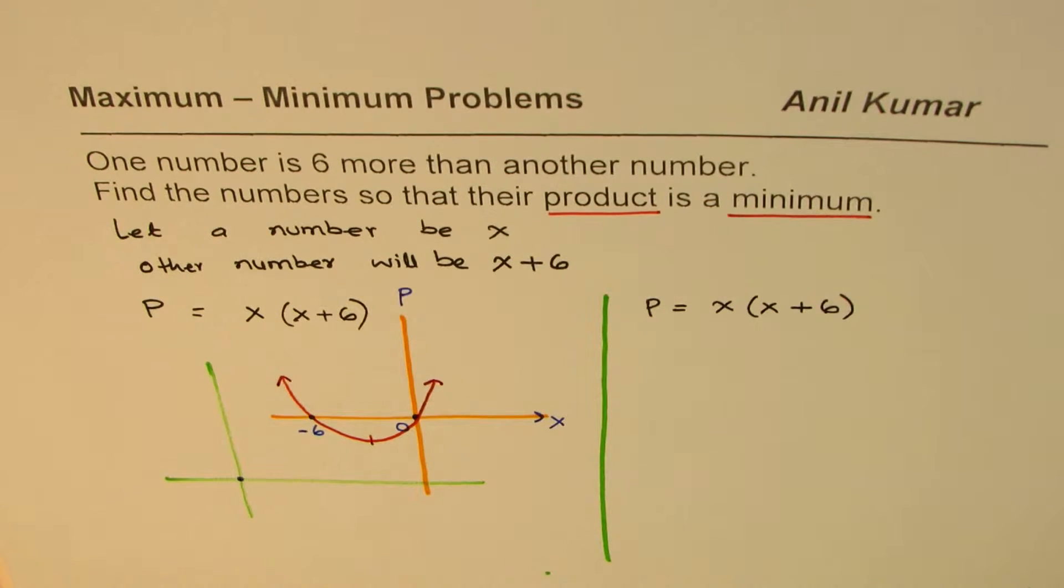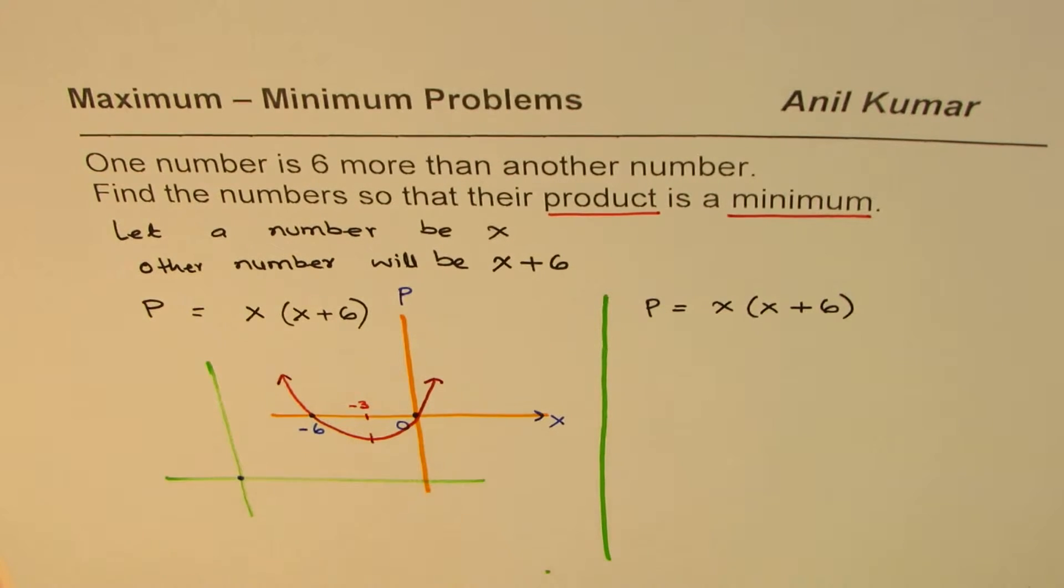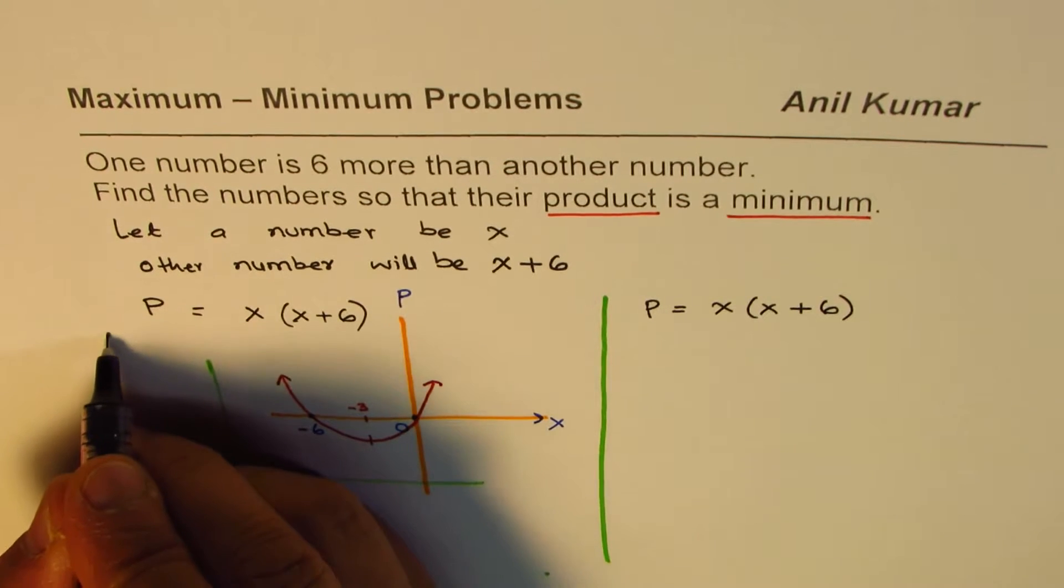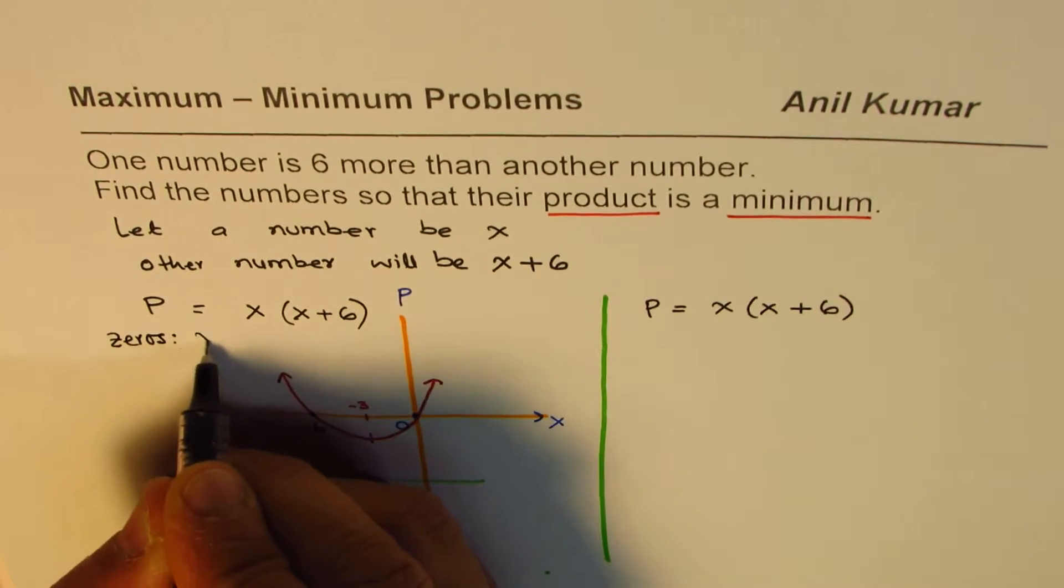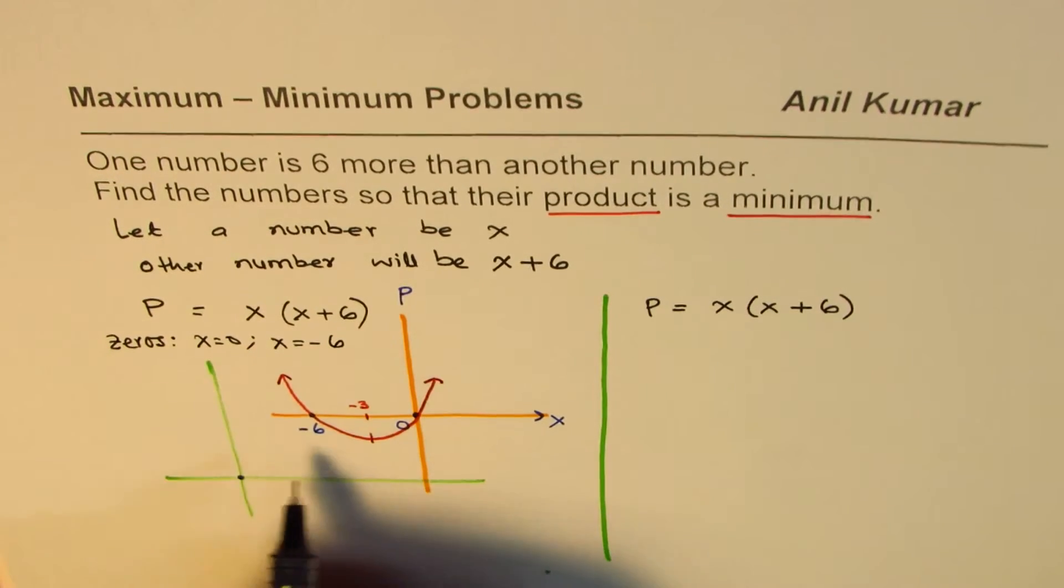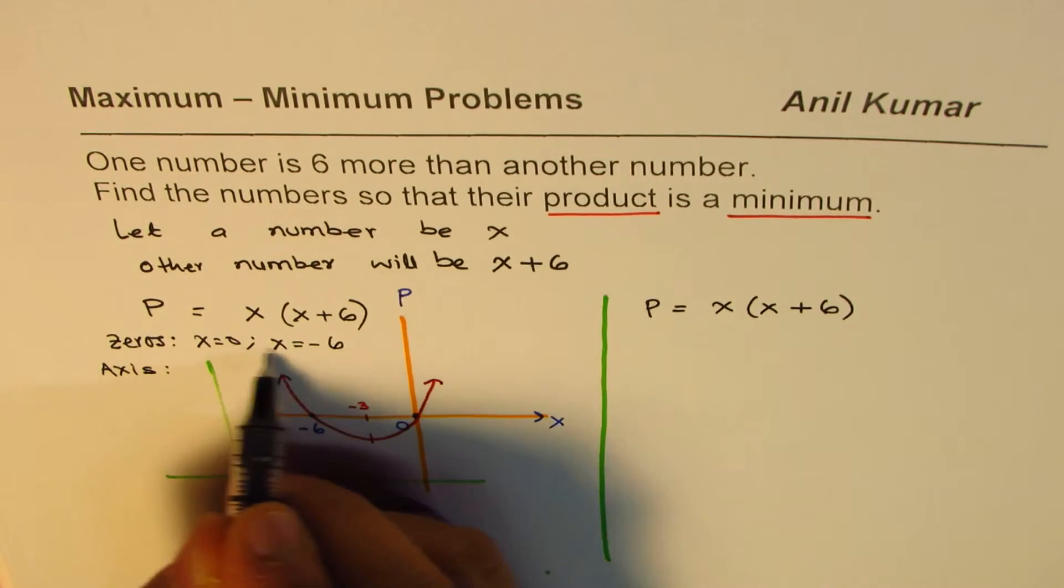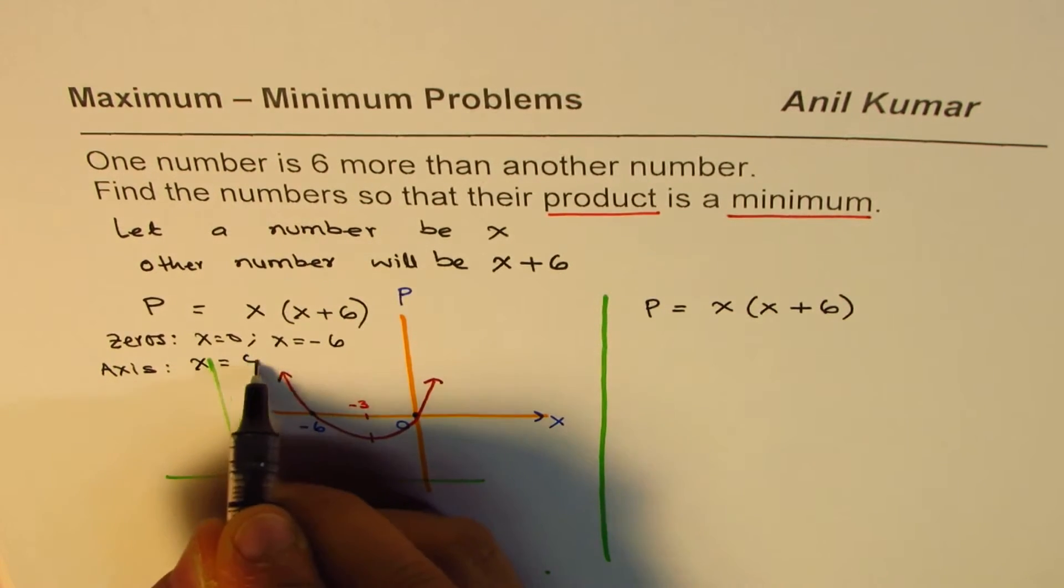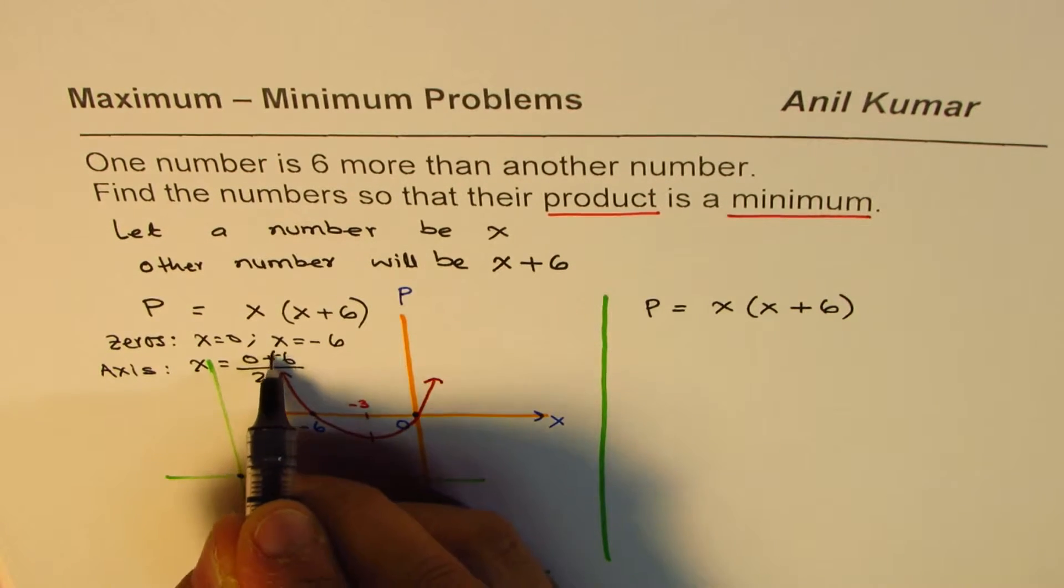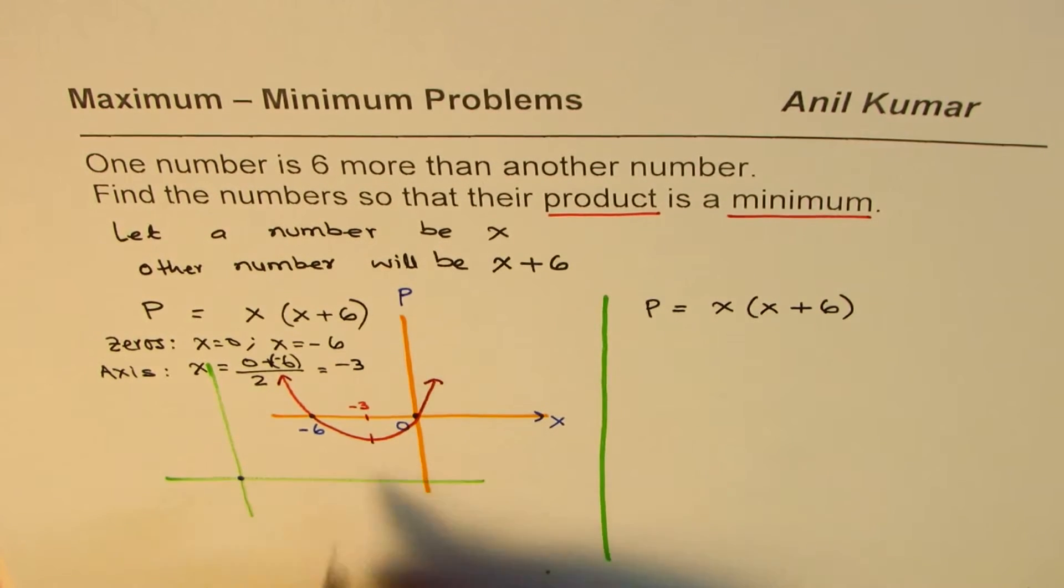So the minimum is right in the middle, which is minus three. How do we get it? So first is we found the zeros, which is at X equals to zero and X equals to minus six. And then we found the axis, which is average of two, which is at X equals to zero plus minus six divided by two. That means minus three. So we get the X value.